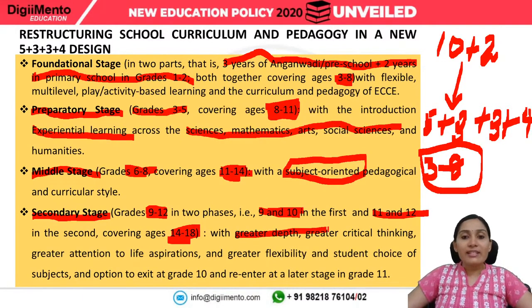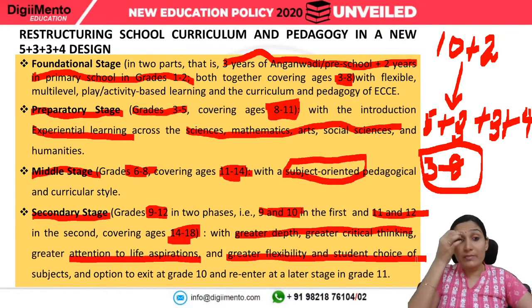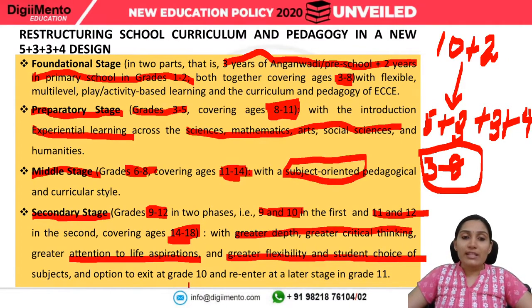At the secondary stage there will be greater depth, greater critical thinking, greater attention to life aspirations, greater flexibility and student choice of subjects, and also the option to exit at grade 10 and re-enter at a later stage in grade 11.